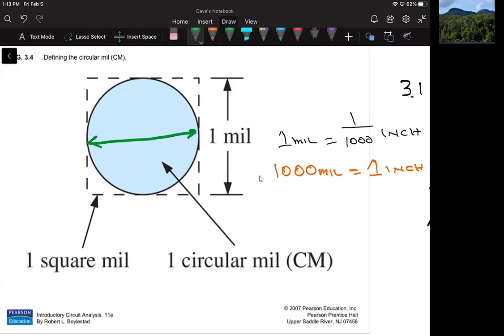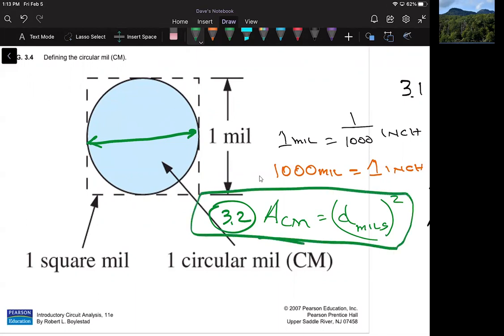And the circular mil is given as this. An area in circular mil is defined as the diameter in mil squared. Now don't overthink this, it's equation 3.2, don't stress with it or anything. It's a defined quantity. It's by definition, the area of a circular wire in circular mils is defined as this. Just run with it, go with it, and everything will be fine.